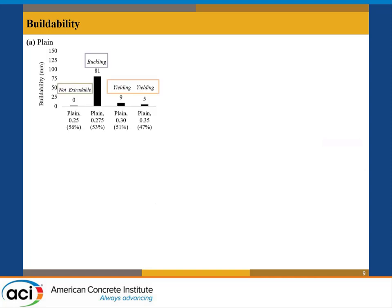Looking at buildability, in plain systems with solid contents higher than 56% — translating to a water concentration of 0.25 — you essentially cannot extrude. As you decrease solid content to 53%, you would be able to extrude; these are nozzle sizes less than two millimeters. And as you increase water concentration to 0.35, you start having yielding. In most of these systems we observed both buckling and yielding, but for the sake of the relationship we focused on buckling.